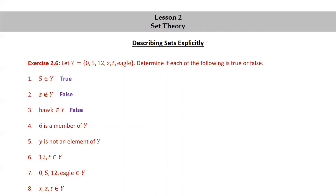Hawk in Y is false. Hawk is not an element of the set Y. 6 is a member of Y is false. Little y is not an element of Y is true, it's not.